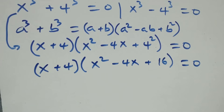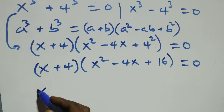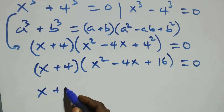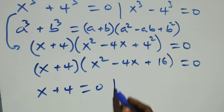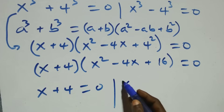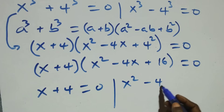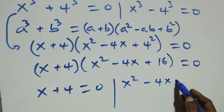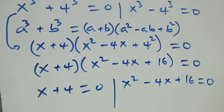That is the same as x plus 4 times x squared minus 4x plus 16 equals to 0. We then have two possible cases: x plus 4 equals to 0, or x squared minus 4x plus 16 equals to 0.